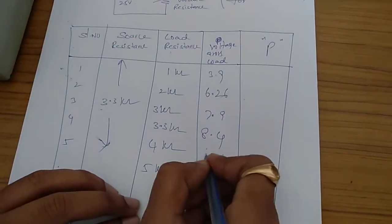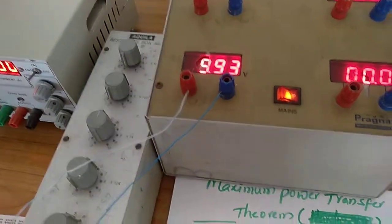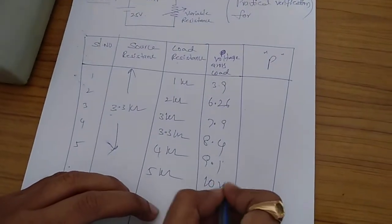When it is 4 kilo ohms, load resistance equal to 4 kilo ohms, it is 9.1. When it is 5 kilo ohms, it is 10 volts.